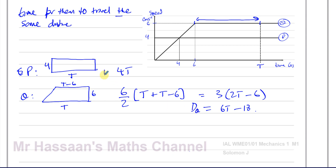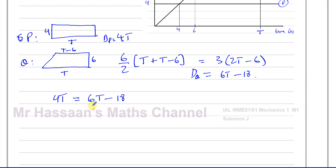So 6T minus 18 is the distance traveled by Q, and 4T is the distance traveled by P in T seconds. To find the value of T for which the distances are the same, we equate them: 4T = 6T minus 18. Adding 18 to both sides and subtracting 4T: 2T = 18, so T equals 9 seconds.